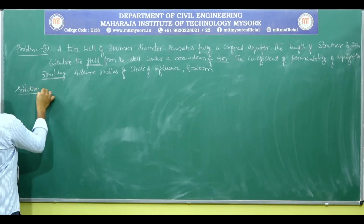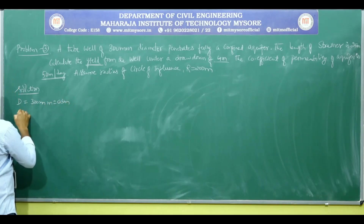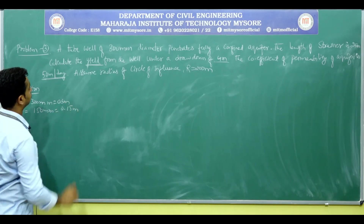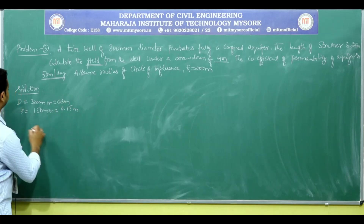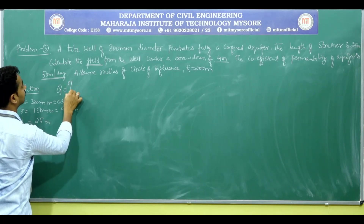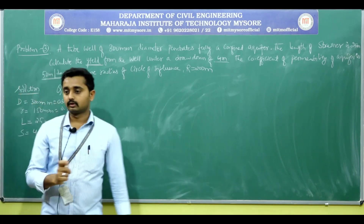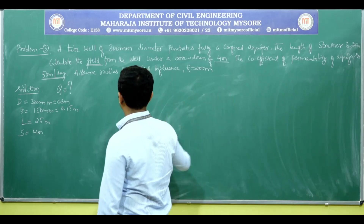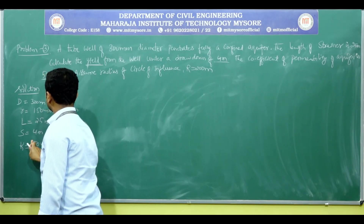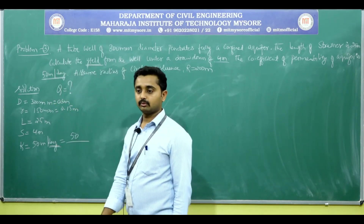Writing the given data: diameter is given as 300 mm, which is 0.3 meters. So the radius r equals 150 mm, which is 0.15 meters. The strainer length L equals 25 meters. Calculate the yield, nothing but discharge, under a drawdown S of 4 meters.